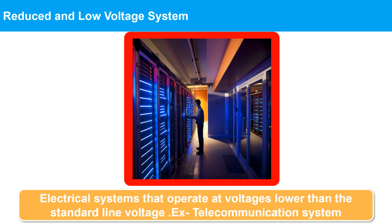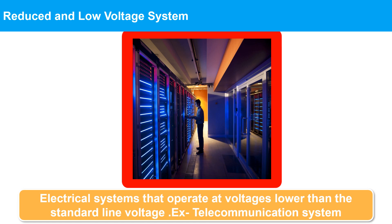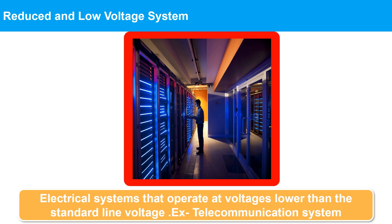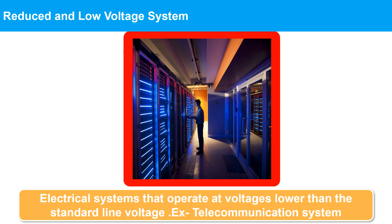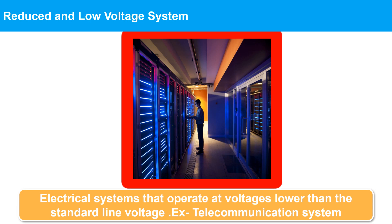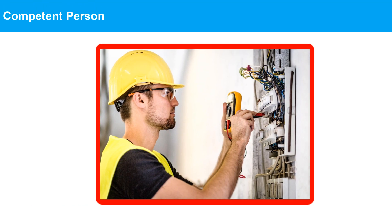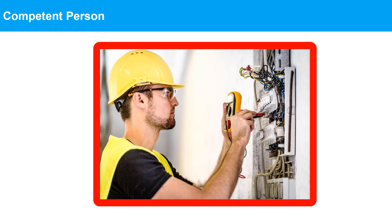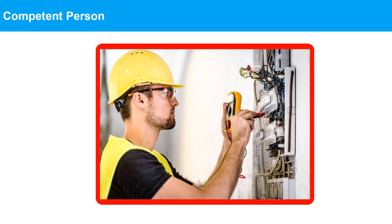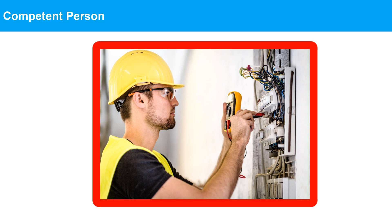Reduced and low voltage systems are electrical systems that operate at voltages lower than the standard line voltage used in power transmission and distribution. Examples include security systems, telecommunication systems, HVAC control systems, lighting control systems, and renewable energy systems. A competent person with respect to electrical safety is someone who has the necessary knowledge, skills, and experience to safely handle and work with electrical equipment. They are trained to identify potential electrical hazards, assess the risks involved, and take appropriate measures to control or eliminate those risks.